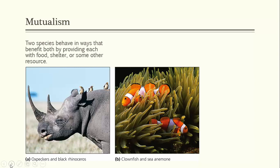Another mutualistic example is oxpeckers and the black rhinoceros: the birds feed on parasitic ticks found on the rhino, helping the rhino while filling their own stomachs. A third example is the hummingbird, which benefits by feeding on nectar from a flower, while the flower benefits because it gets pollinated.